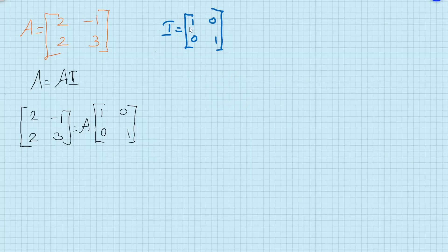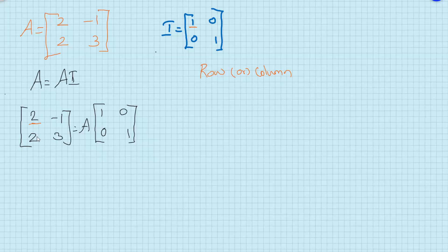My first element a₁₁ should be 1, but what I have here is 2. To make this 1, I will use either a row operation or column operation.